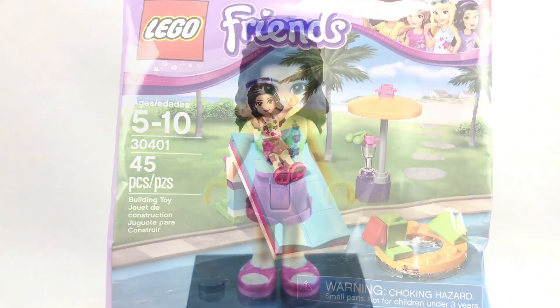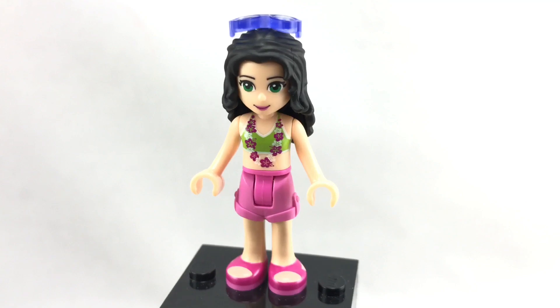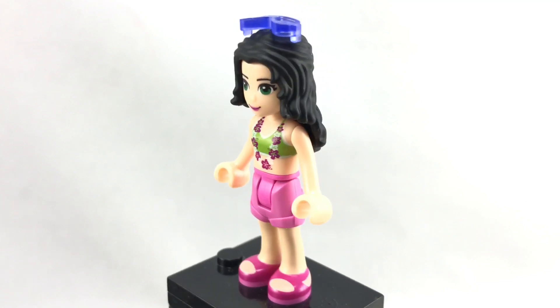Now let's take a look at that mini doll. So here is Emma. Her torso and legs are actually kind of hard to find - they both come in I think 4 sets total including this set.